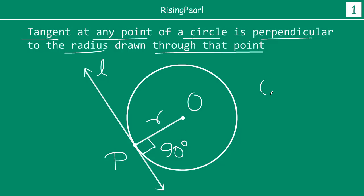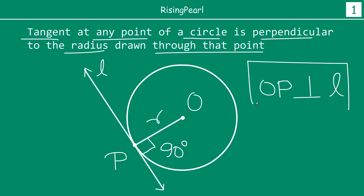In other words, OP — which is the radius drawn through point P — must be perpendicular to line L, which is the tangent. So the tangent at any point of the circle is perpendicular to the radius drawn through that point. It's very important that you understand this, and you will see an enormous amount of application of this in the questions we are going to solve in this series.